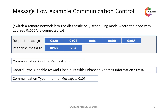Here is one more message flow example for communication control — accessing remote LIN nodes. An engine ECU node has a LIN node connected with the address 0x000A. The request message format is 0x28 as SID, and 0x04 is the control type — enable RX and disable TX with enhanced address information. The address is 0x000A and the communication type is normal messages, meaning the ECU server allows RX/TX. The diagnostic tester will then have direct access to the subnet node through the ECU server. A positive response is 0x68 followed by 0x04.